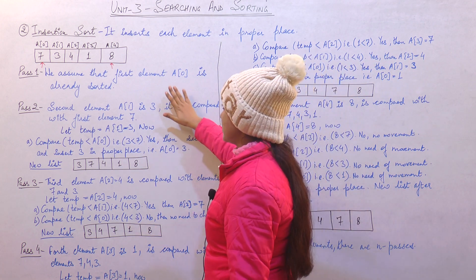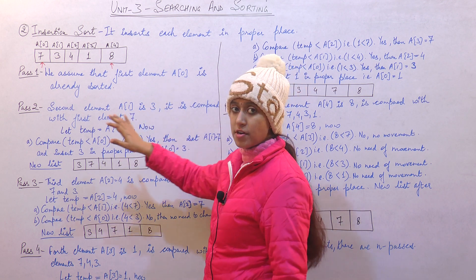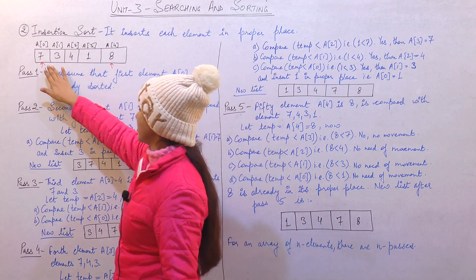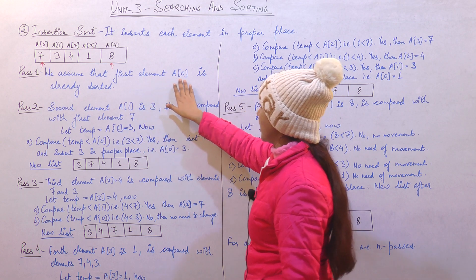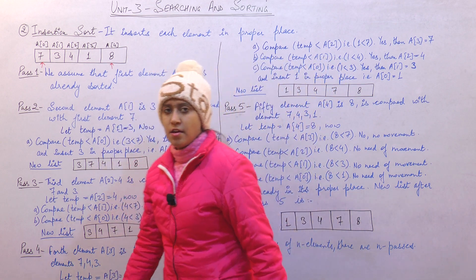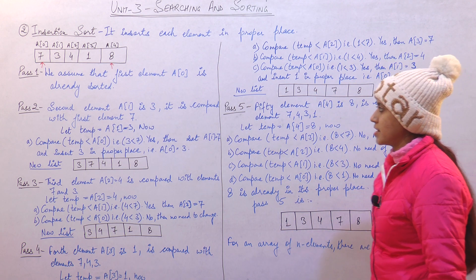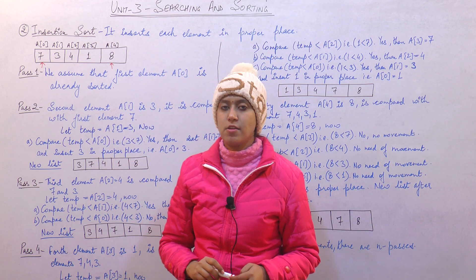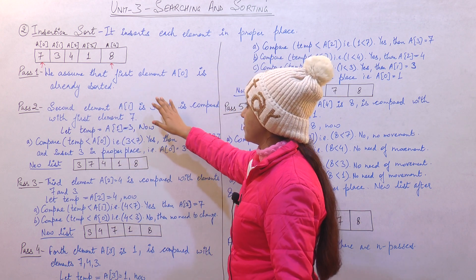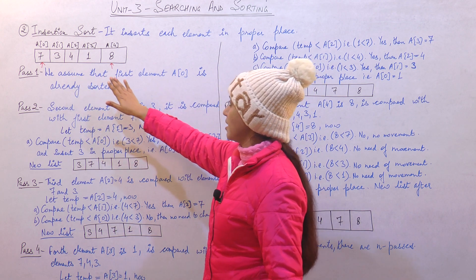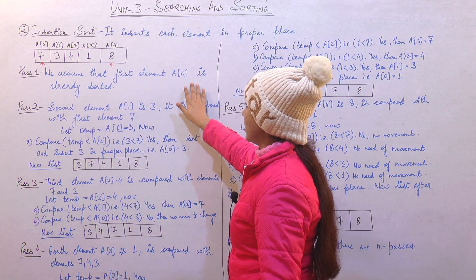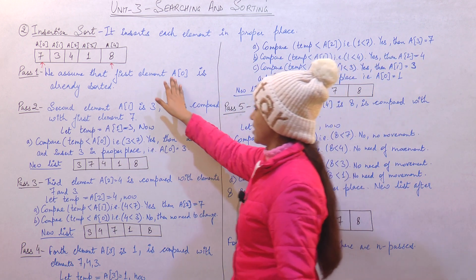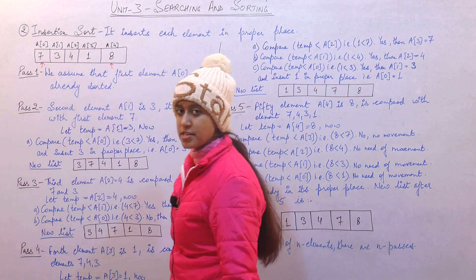For applying insertion sort, in pass 1, we assume that the first element — that is, the element at location a0 — is already sorted. So, 7 is the first element, which we assume is already sorted.